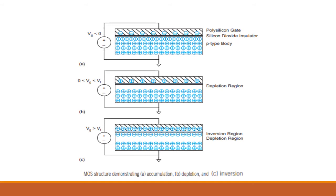In depletion mode, a small positive voltage is applied to the gate terminal. Positive charge carriers accumulate at the gate and repel the positive charge carriers present in the P-type body, creating a depletion region. This mode is called depletion mode. The applied positive voltage in depletion mode is less than the threshold voltage.